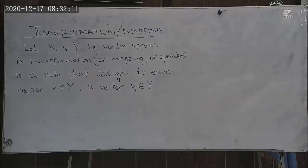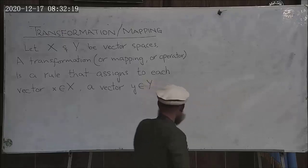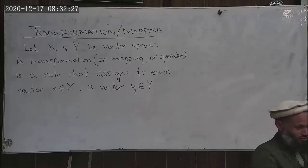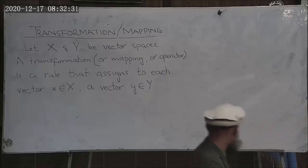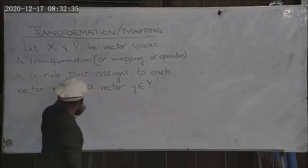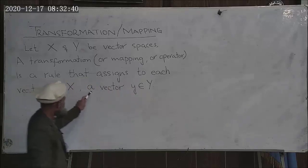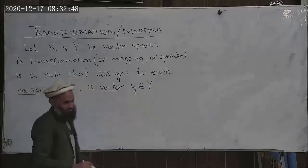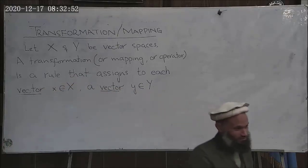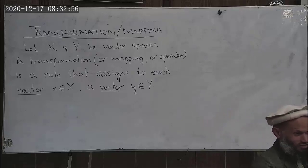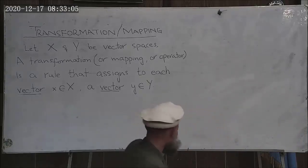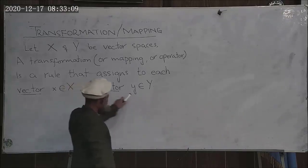What is our transformation — our mapping, our so-called operator transformation? To understand it, let's consider two vector spaces. You are now well familiar with vector spaces: they are sets which satisfy a few properties called axioms. A transformation is a rule that assigns to each vector x in one space another vector y in another space. Here, the word 'vector' means an object in that space — it does not have to be a column vector or row vector.